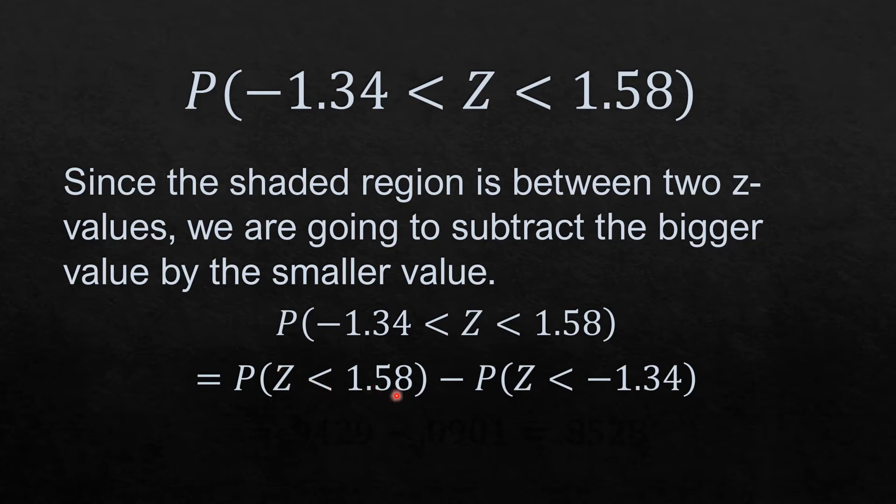The probability that Z is greater than negative 1.34 but less than 1.58 can be written as the probability that Z is less than 1.58 minus the probability that Z is less than negative 1.34. That will be 0.9429 minus 0.0901, which equals 0.8528.